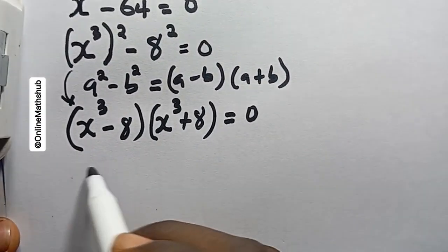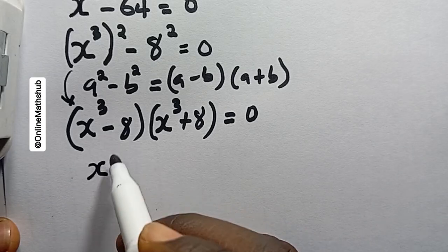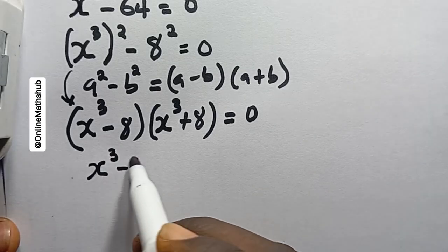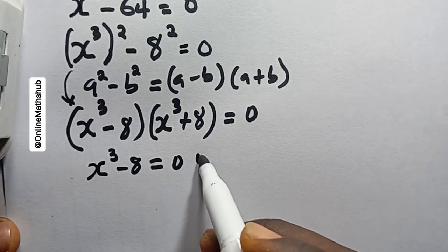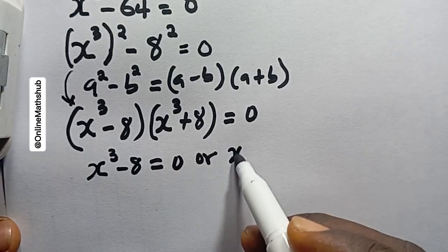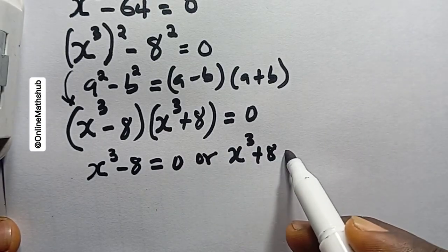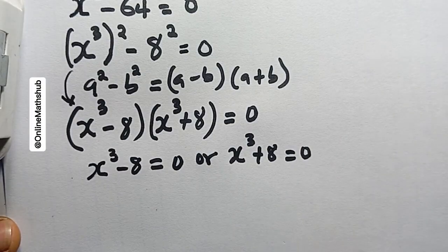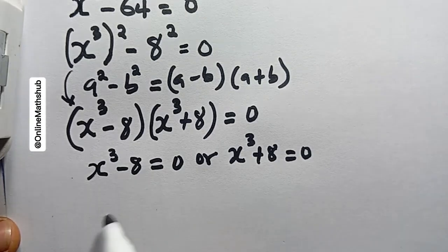This changes to x to the power of 3 minus 8, multiplied by x to the power of 3 plus 8, equals 0. Using the zero product rule, this implies that x cubed minus 8 equals 0, or x cubed plus 8 equals 0. I'm going to solve these two equations to find all values of x.